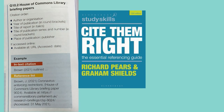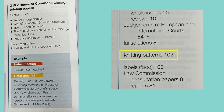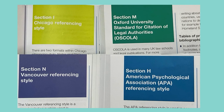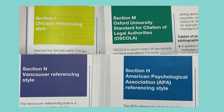You can use the index at the back to track down specific information types. In this edition of the book, for example, the information about how to reference knitting patterns in Harvard style can be found on page 102. The majority of the space in the book is given to Harvard style referencing, but there are sections for seven other frequently used referencing styles as well.